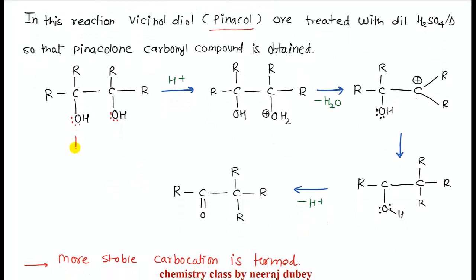The original diol whose common name is pinacol — when treated in acidic medium or Lewis acid medium — is converted into a ketone. This ketone is called pinacolone, and this type of rearrangement is called pinacol to pinacolone rearrangement.